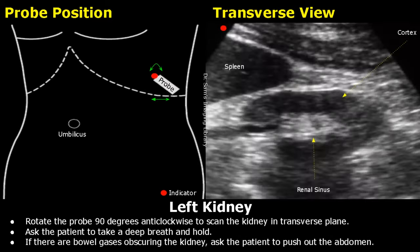Next, rotate the probe 90 degrees anticlockwise to scan in transverse plane. Using the same breath hold technique, we will get a transverse view of the left kidney. We can see the spleen here. This is the renal cortex with hyperechoic renal sinus in the middle.